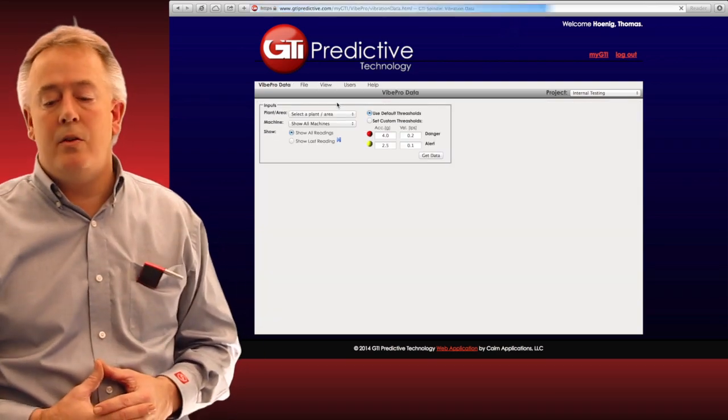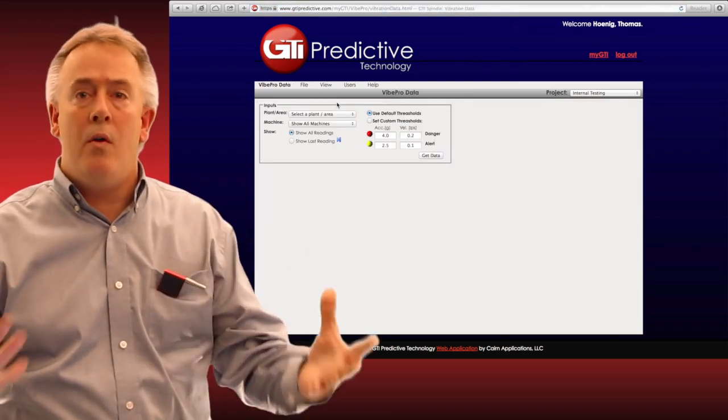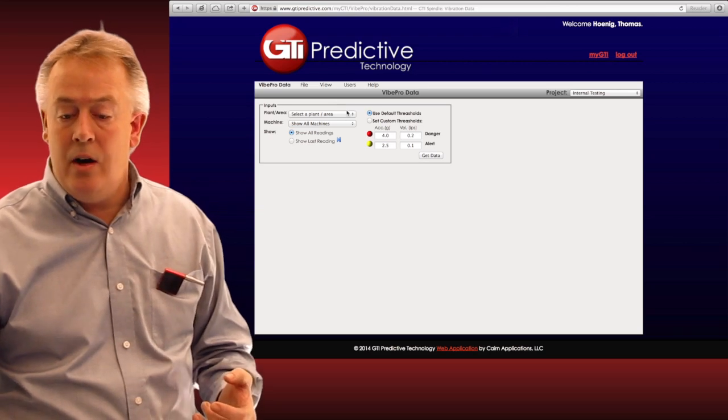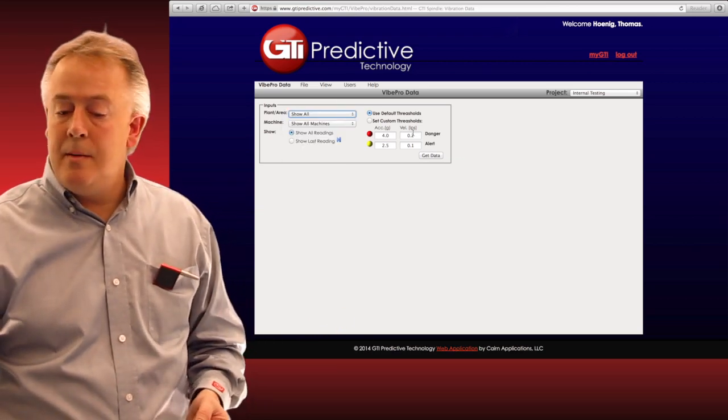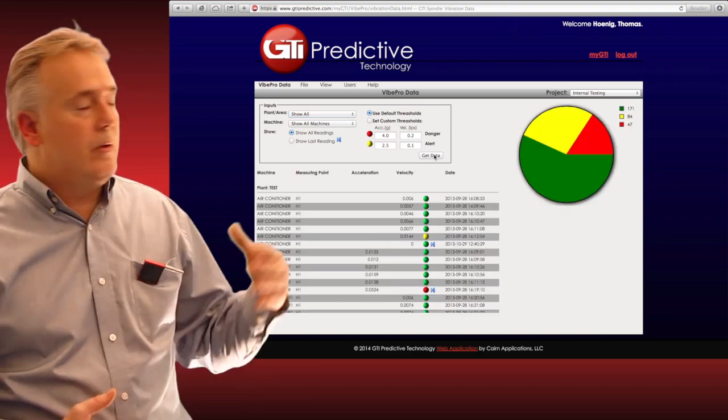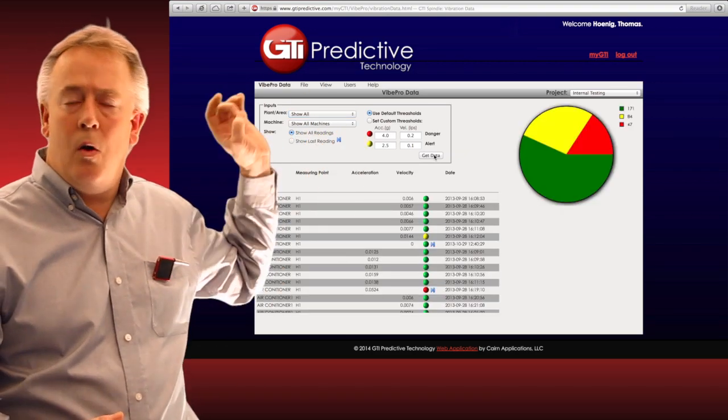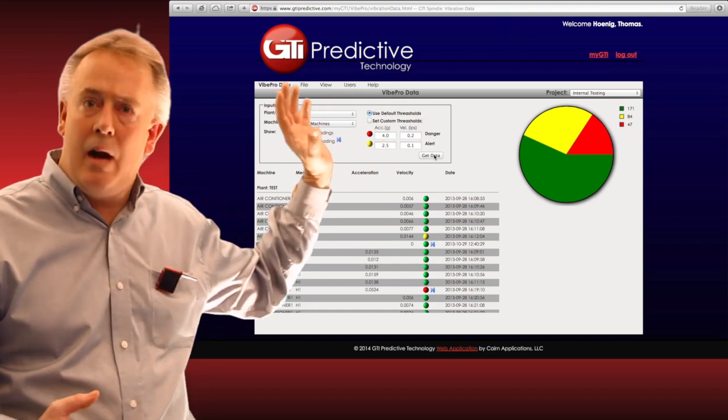What's even nicer, we're going to pull the spectrum back down real quick, and we're going to simply go to the view button and go to vibration data. What this is going to do for us is allow us to select all the plants, all the areas within our plant or asset points, hit show all, and then simply just click get data.